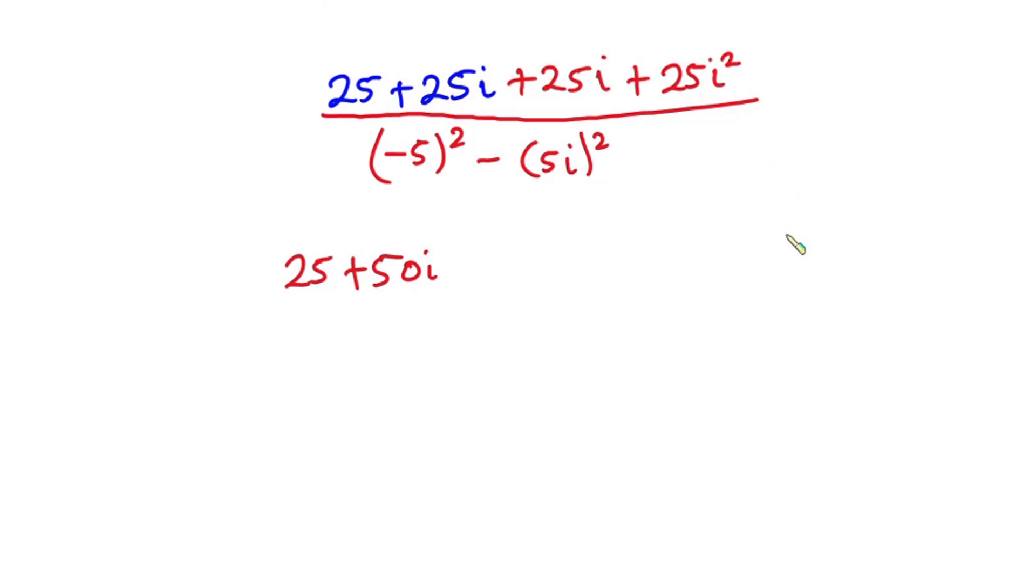Now one thing you should note is that i is equal to square root of negative 1. So i squared will be square root of negative 1 squared. So these two will cancel the square root. So we have i squared is equal to negative 1. So in place of i squared, I'm going to put negative 1.